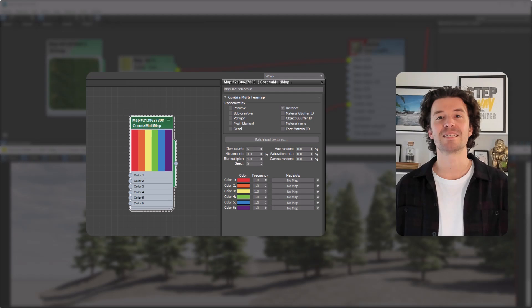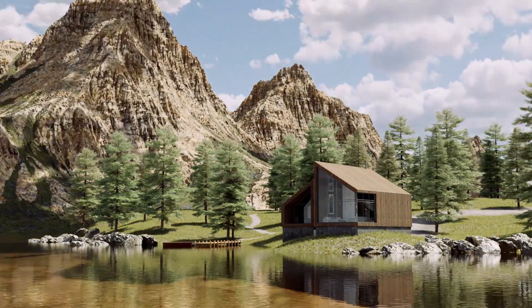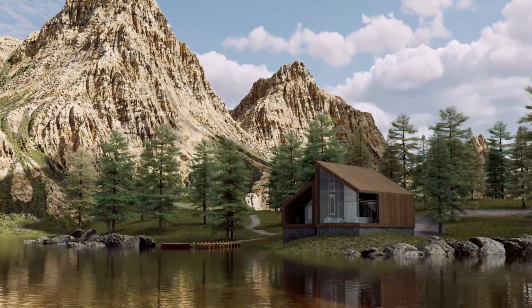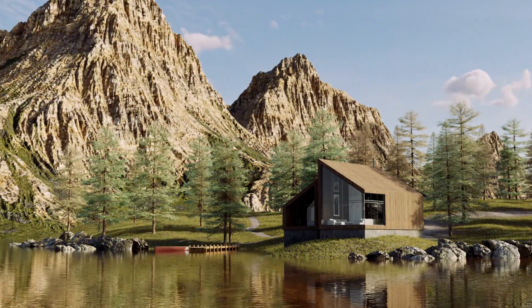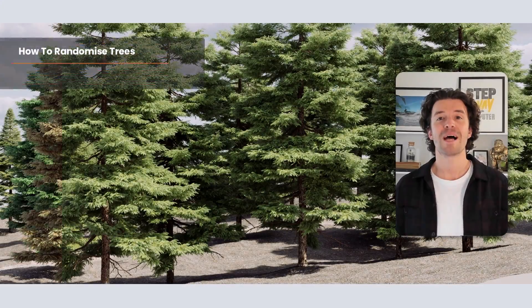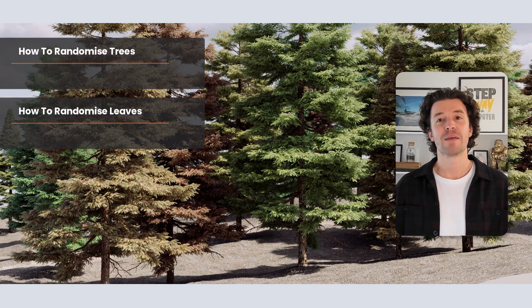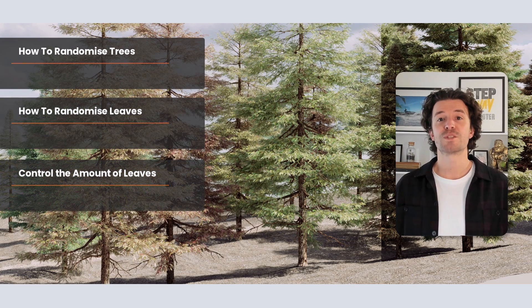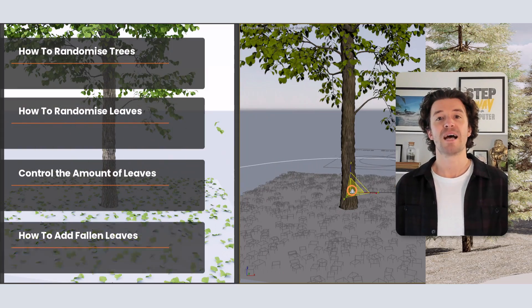Hello, this is Jake from the Corona team. This is the Corona Multi-Map. In this video I'm going to show you how to use the Multi-Map to avoid repetition by varying the colors and opacity of each tree and leaf, all from a single material. We'll start by adding random hues to change the season, and then we'll move on to individual elements within each tree.